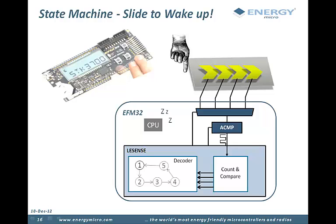Another example of the possibilities of autonomous operation with LeSense is capacitive touch gesture detection. This example demonstrates how the internal state machine in LeSense, or the decoder as it is called in the reference manual, works.